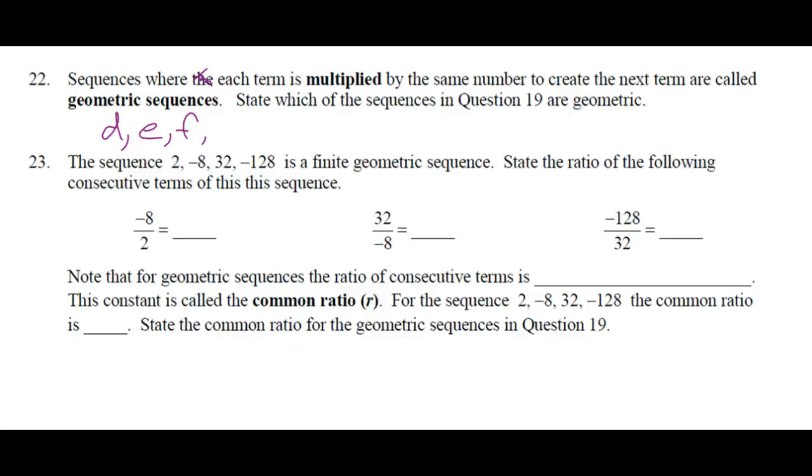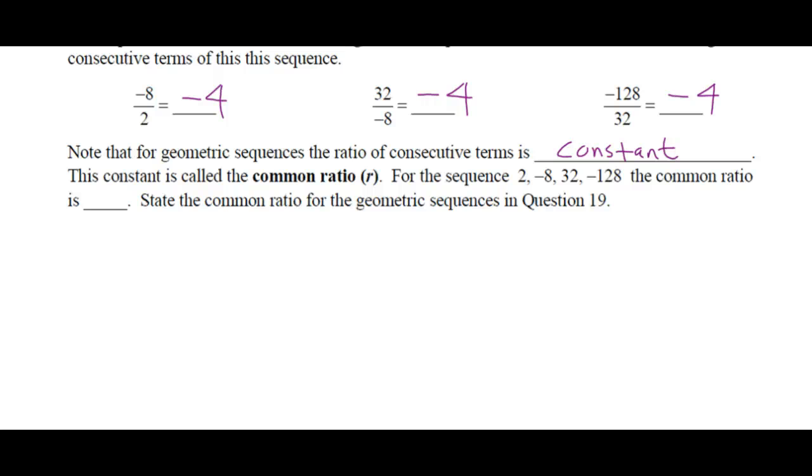State the ratio of the following consecutive terms. In arithmetic sequences, we take the difference between two terms. So in geometric, we're dividing. So negative 8 divided by 2 is? 32 divided by negative 8 is? Negative 128 divided by 32 is? Note that for geometric sequences, the ratio of consecutive terms is constant. This constant is called the common ratio, R. For the sequence 2, negative 8, 32, negative 128, the common ratio is? Negative 4.